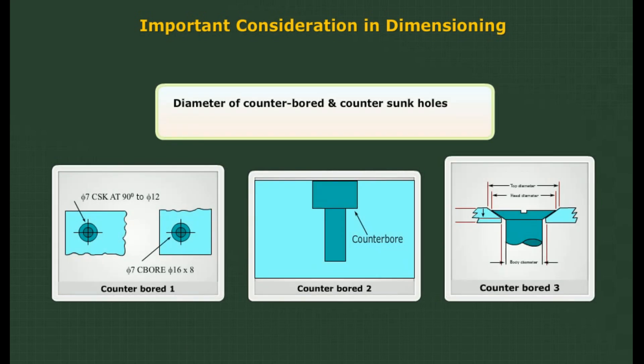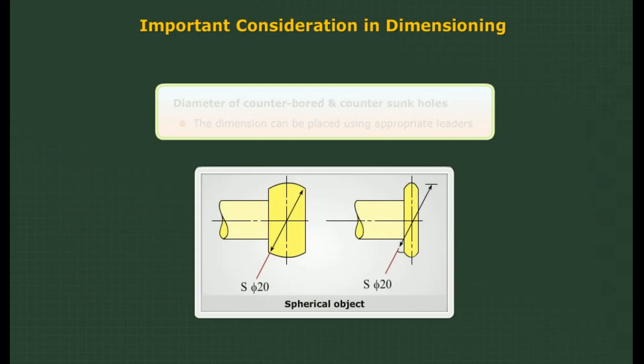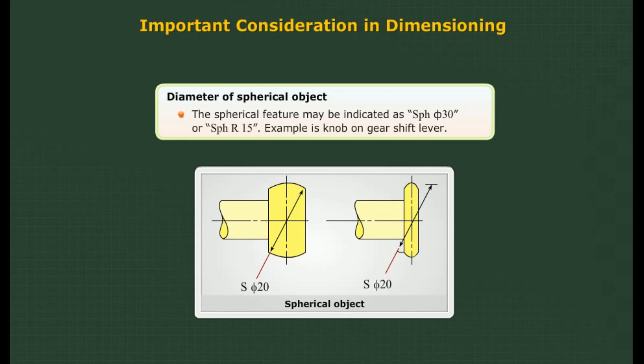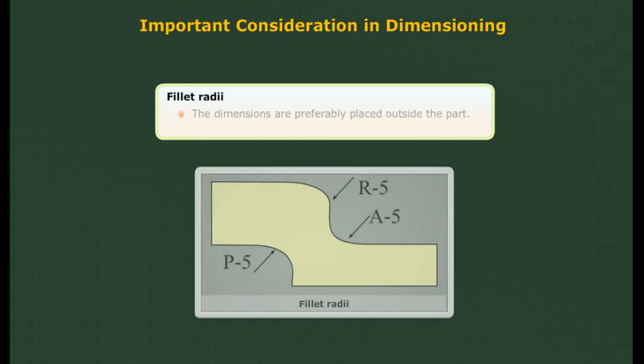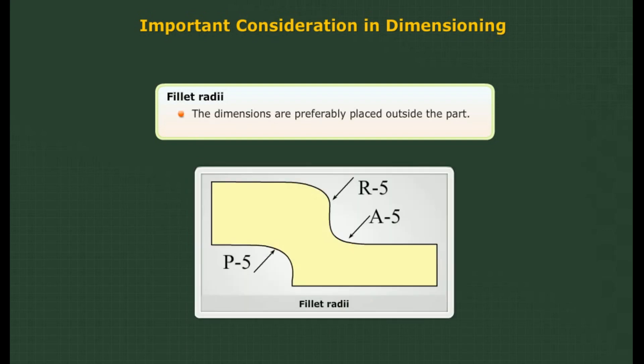Diameter of counterbored and countersunk holes: The dimensioning can be placed using appropriate leaders. Diameter of spherical objects: The dimension may be placed as shown; in some cases the spherical feature may be indicated as SPH Φ or SPH R 15. An example is a knob on a gear shift lever. Fillet radii: Castings, forgings, and many machined or moulded parts feature corner or fillet radii.